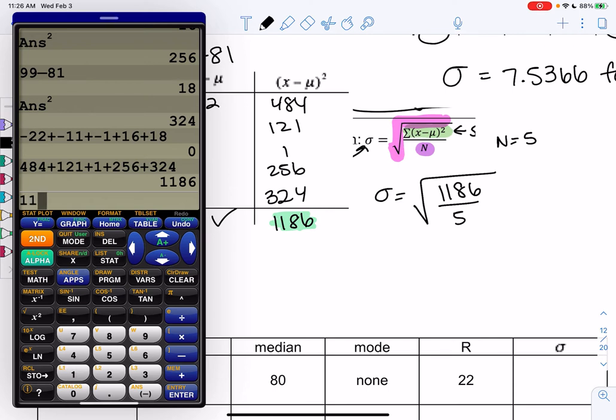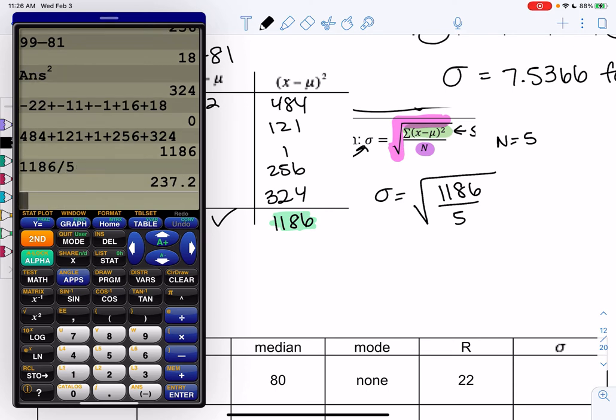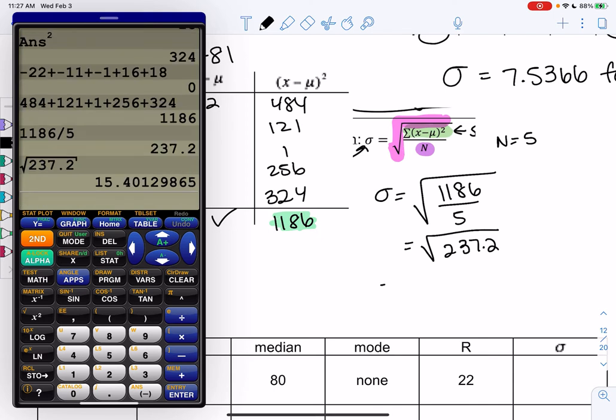So you can go ahead and do division, 1186 divided by 5, and then we'll take the square root of 237.2. And that'll be my standard deviation. So 15.401. We'll talk about rounding in example 3.